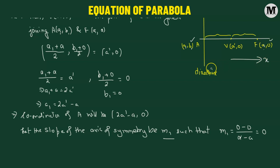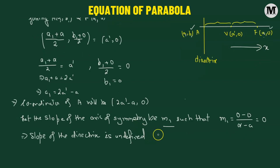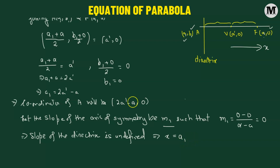Since the axis of symmetry is parallel to the x-axis, the directrix is parallel to the y-axis. Any line parallel to the y-axis has an undefined slope, and its equation is simply x equals the x-coordinate of the point through which it passes, which is a1. So x equals a1, and since a1 equals 2a prime minus a, the equation of the directrix is x equals 2a prime minus a.